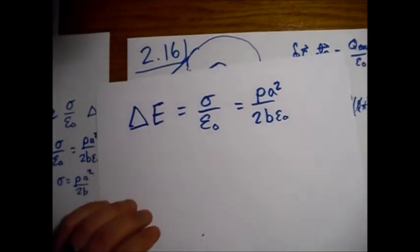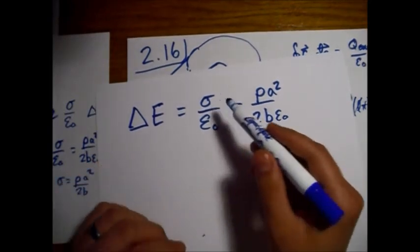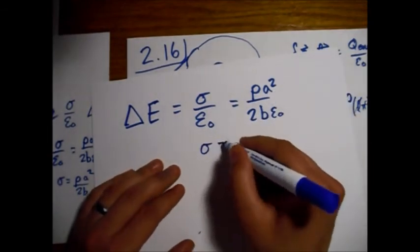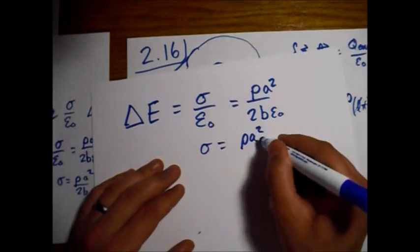Now if we solve for sigma, we just get the rho A squared over 2 B.